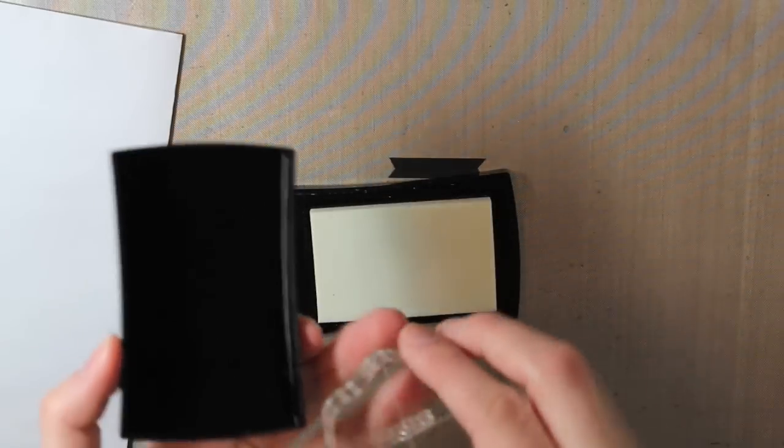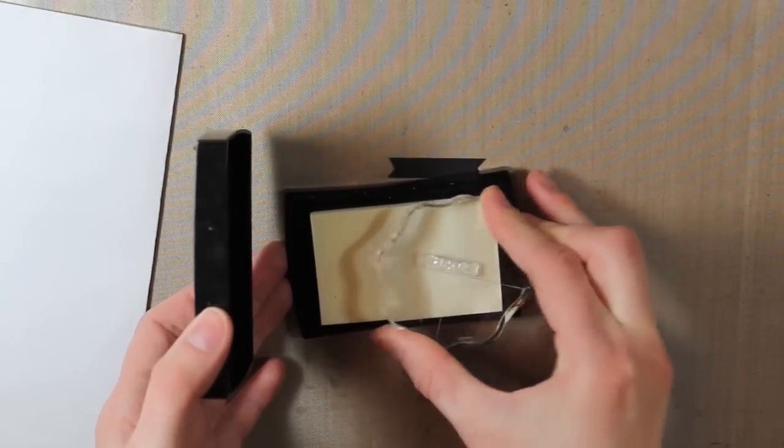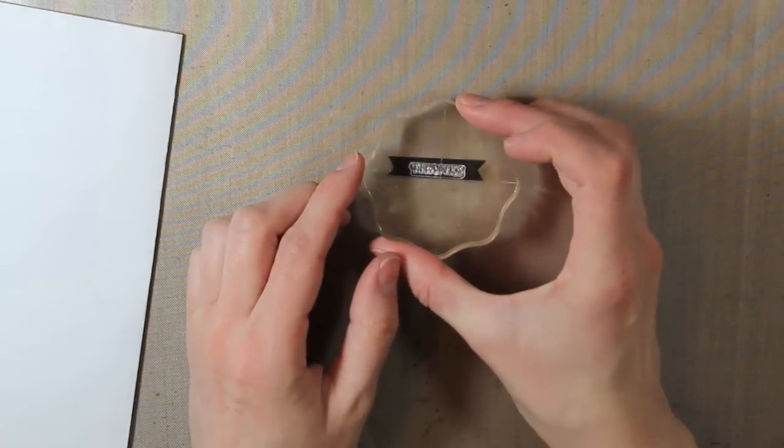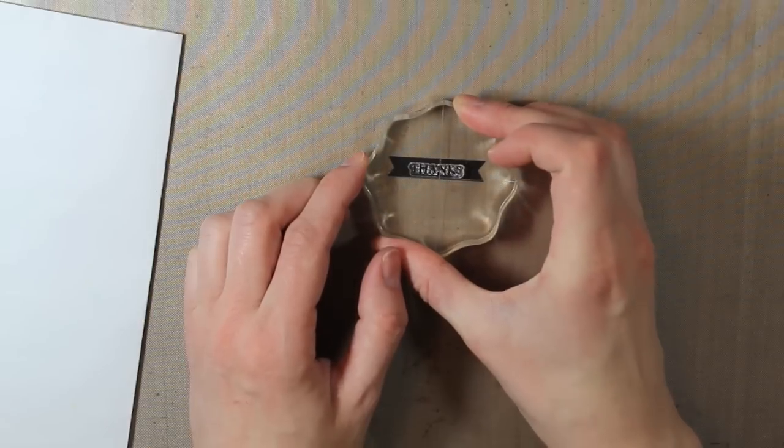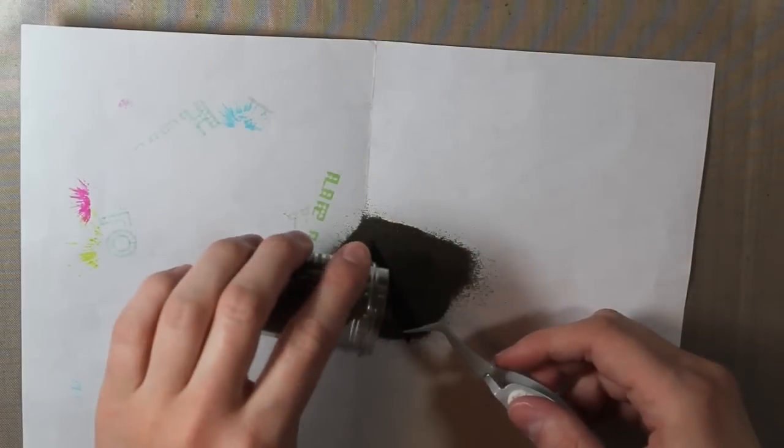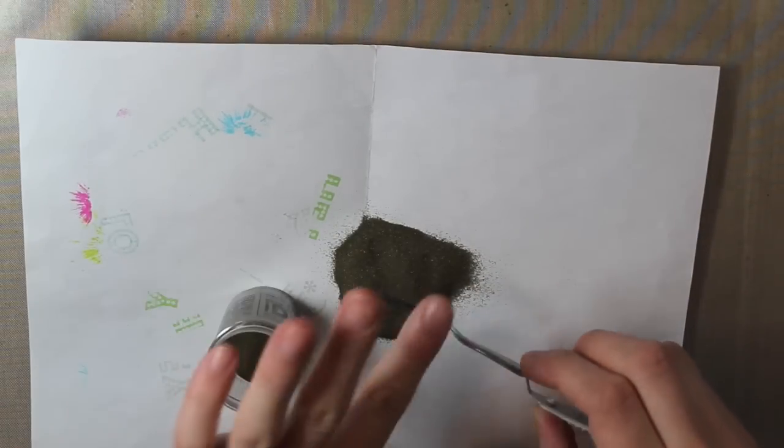Alright, so then for the sentiment I am using the thanks from the same stamp set. And I have this little tiny fishtail banner that I cut. So I'm going to stamp that right in the center and then I am going to heat emboss that with the same gold embossing powder that I've been using.